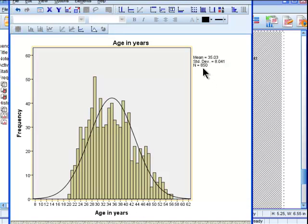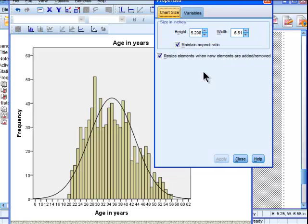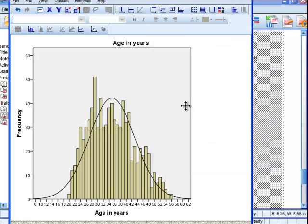Before I do that, we can see that the mean of age is 35 here, and standard deviation is 8.0, and a sample size of 850. I usually delete that and get it out of the way because I want the chart to be a bit bigger.